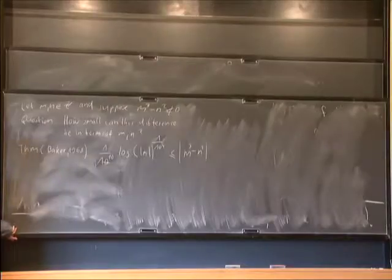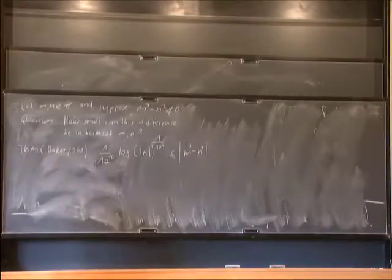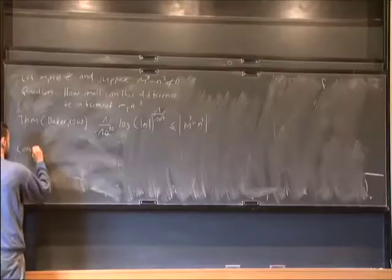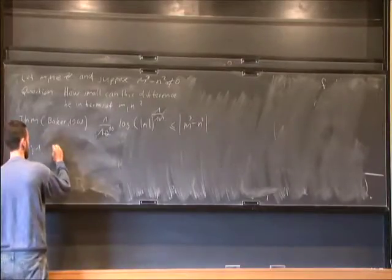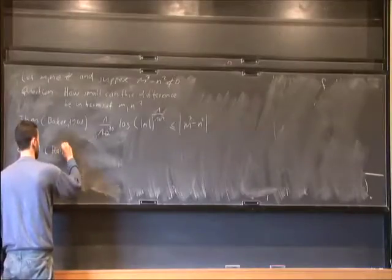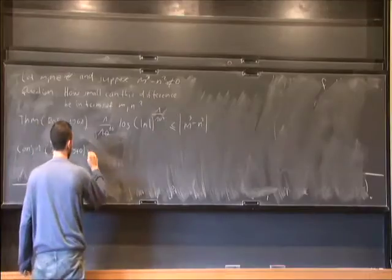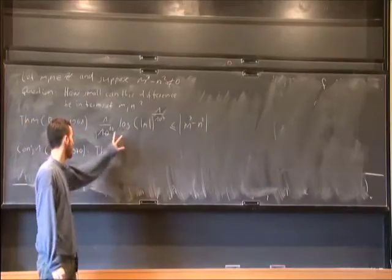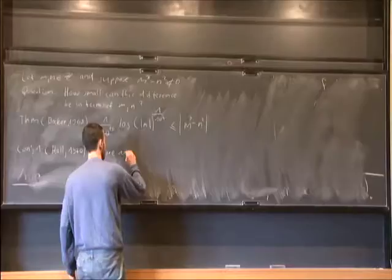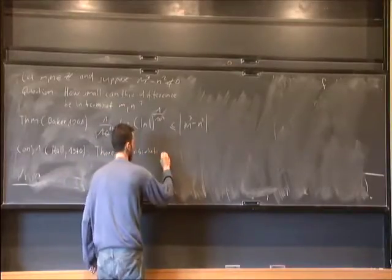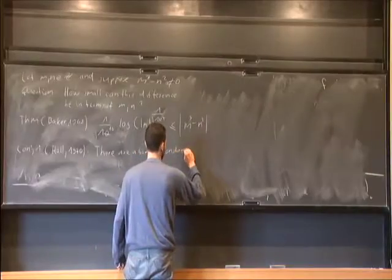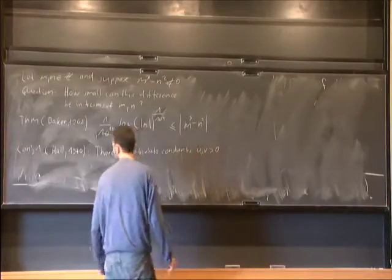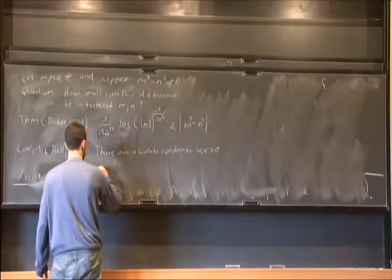Two years later, Marshall Hall used some computer experiments and proposed the following conjecture (Hall, 1970). Essentially, he conjectured that one can replace this by taking away the logarithm. There are absolute constants u and v, both positive, such that u/n^v ≤ |2^m - 3^n|.